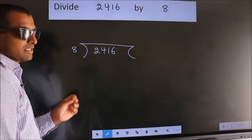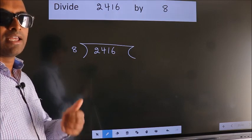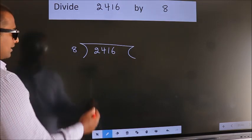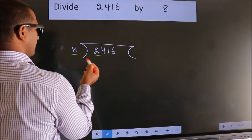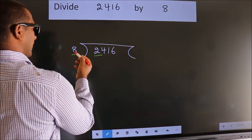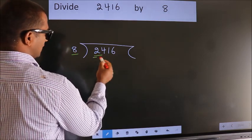This is step 1. Next, here we have 2, here 8. 2 is smaller than 8, so we should take 2 numbers: 24.